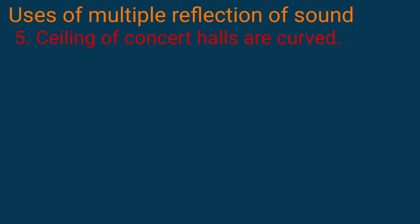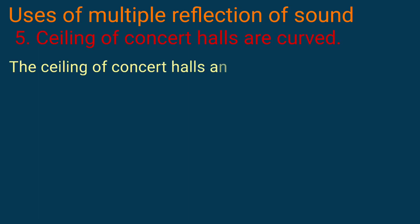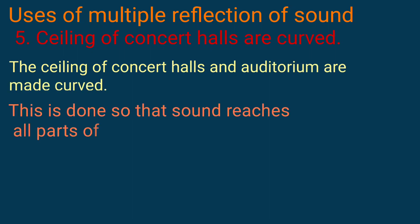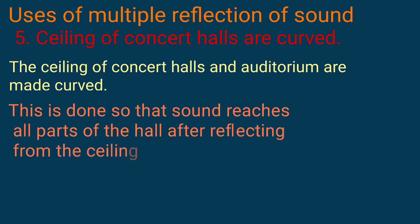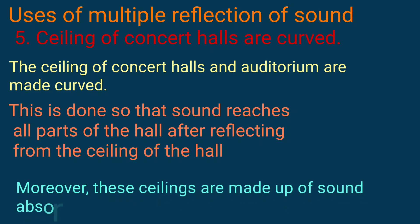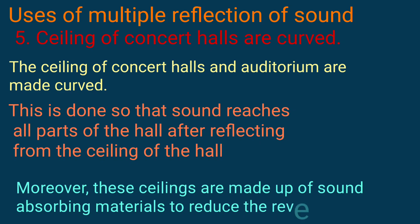The ceilings of concert halls and auditoriums are made curved. This is done so that sound reaches all parts of the hall after reflecting from the ceiling. Moreover, these ceilings are made up of sound-absorbing material to reduce reverberation.